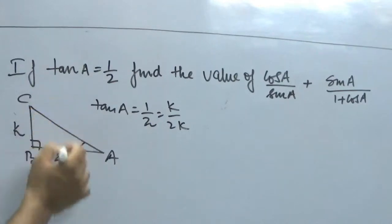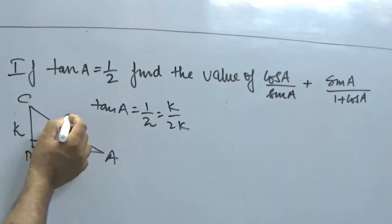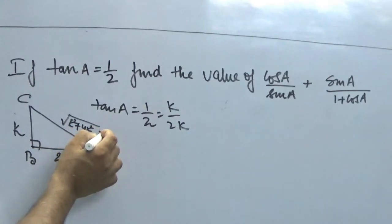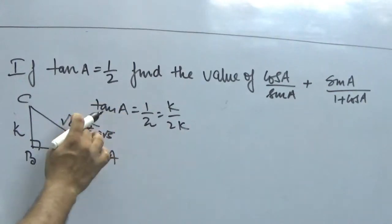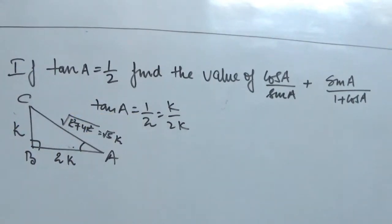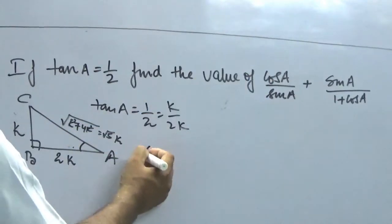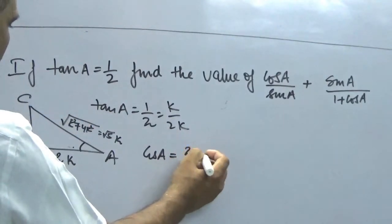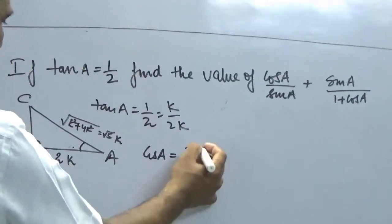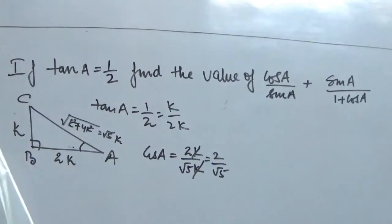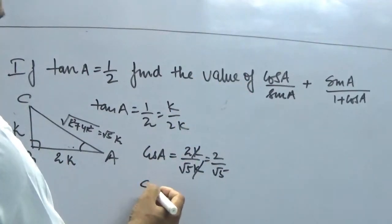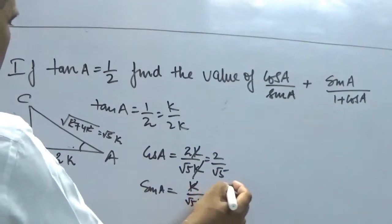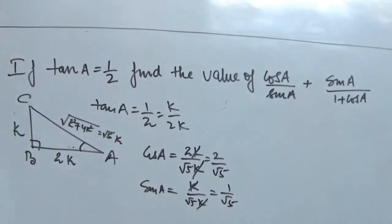And this is the right angle triangle, so we can apply the Pythagoras theorem and this we will get as k² + 4k², which is nothing but √(5k²). Once it comes out it becomes √5k. Now we can find out all the values. Cos A is equal to adjacent side by hypotenuse, which is nothing but 2k/√5k. K gets cancelled, we get 2/√5. Now let's find out sin A, which is nothing but k/√5k, which gives us 1/√5. So we have got both the values.